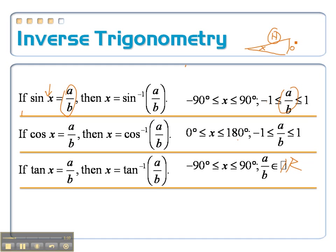But for the tangent, it's opposite over adjacent. This could be a small number divided by a big number or a big number divided by a small number. It's not going to make any difference. You can have all real numbers there.